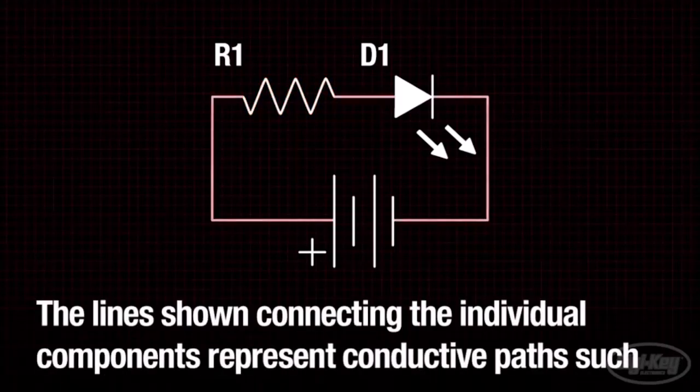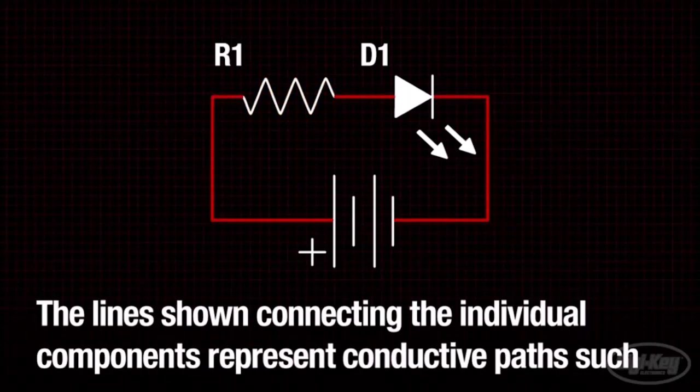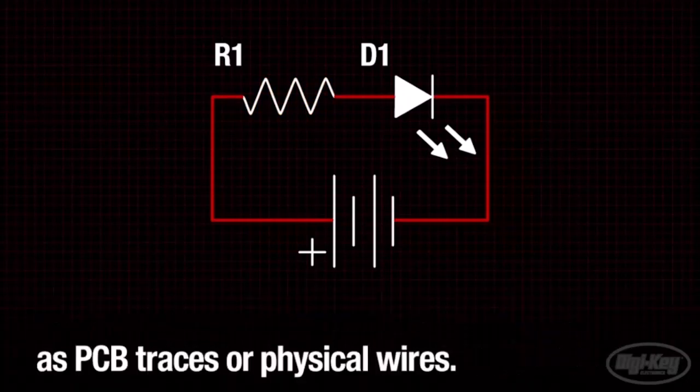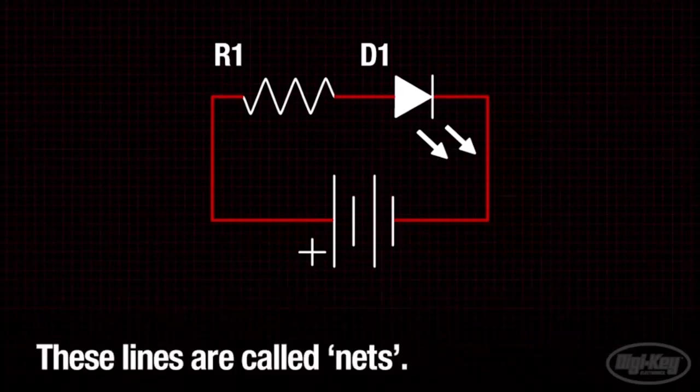battery terminals. The lines shown connecting the individual components represent conductive paths such as PCB traces or physical wires. These lines are called nets.